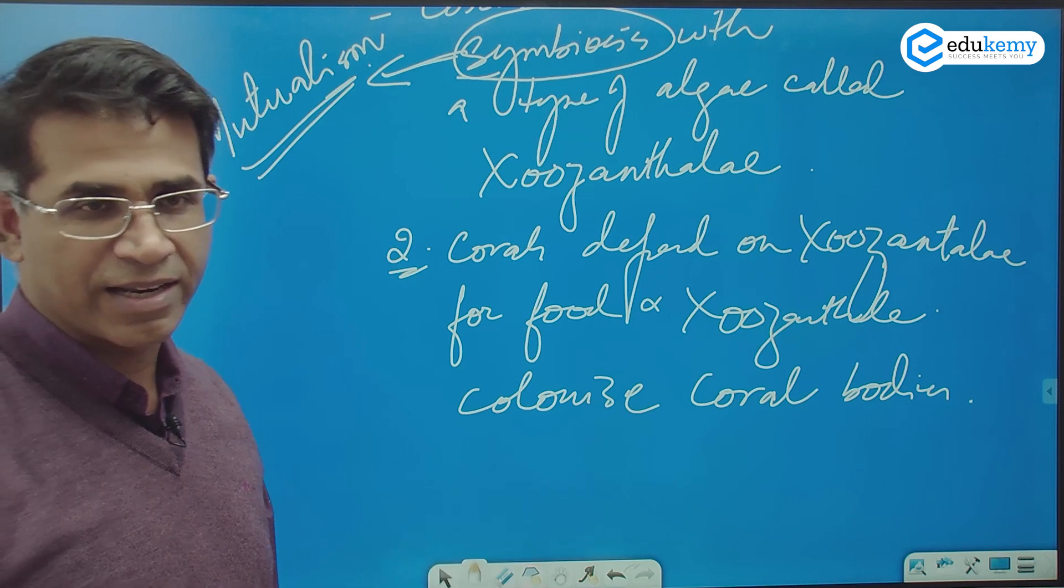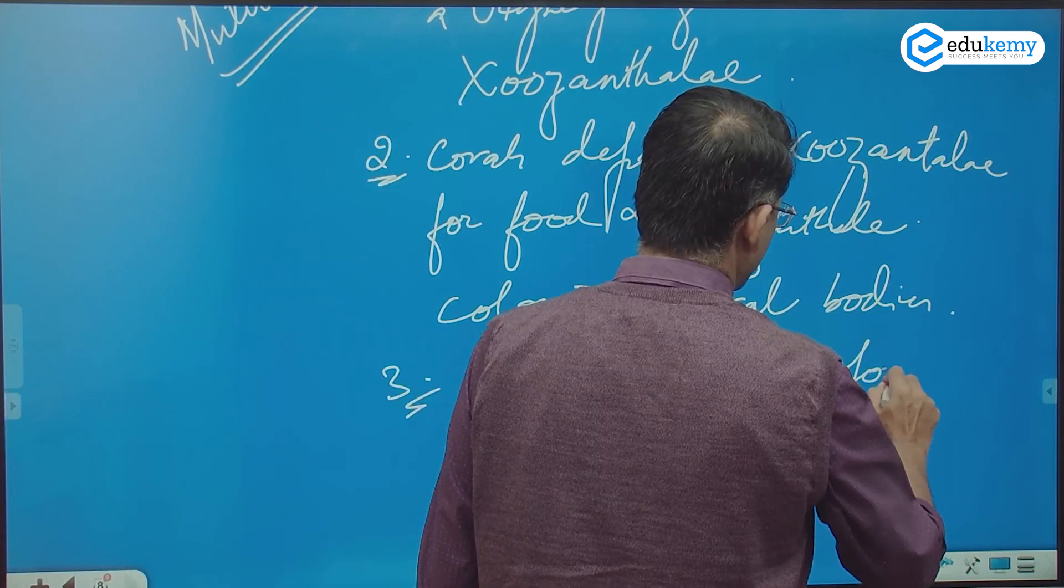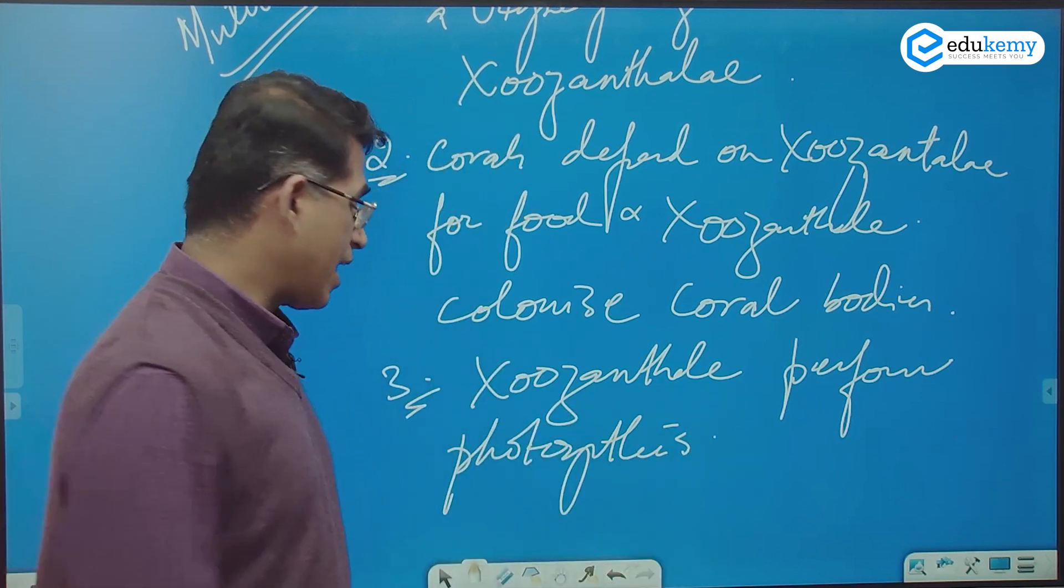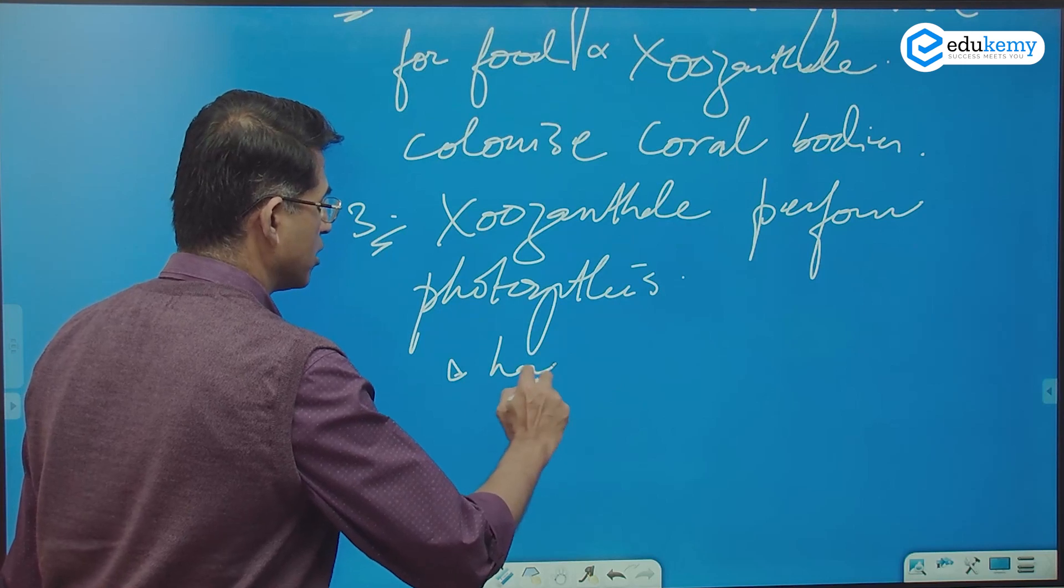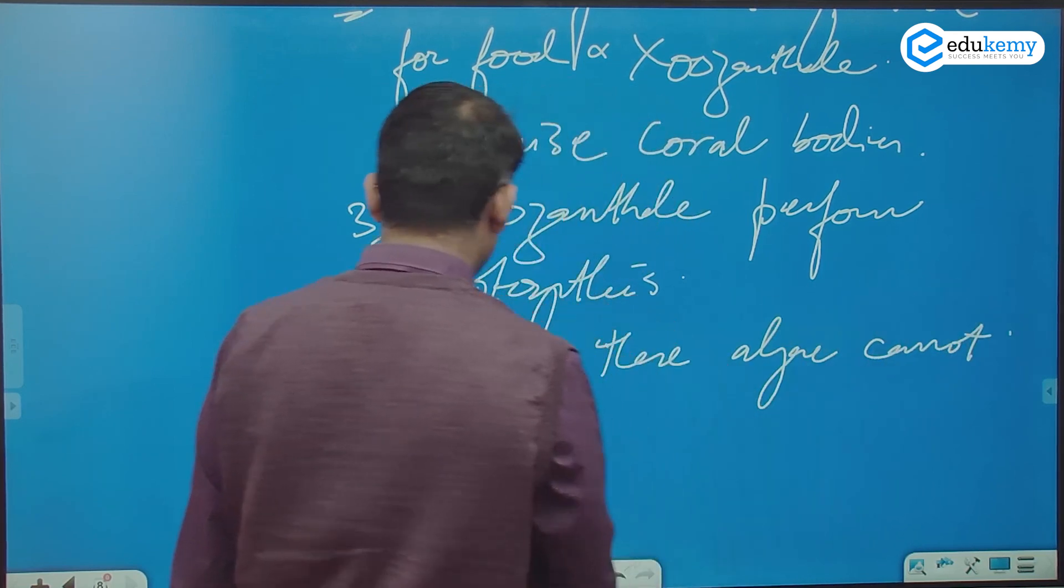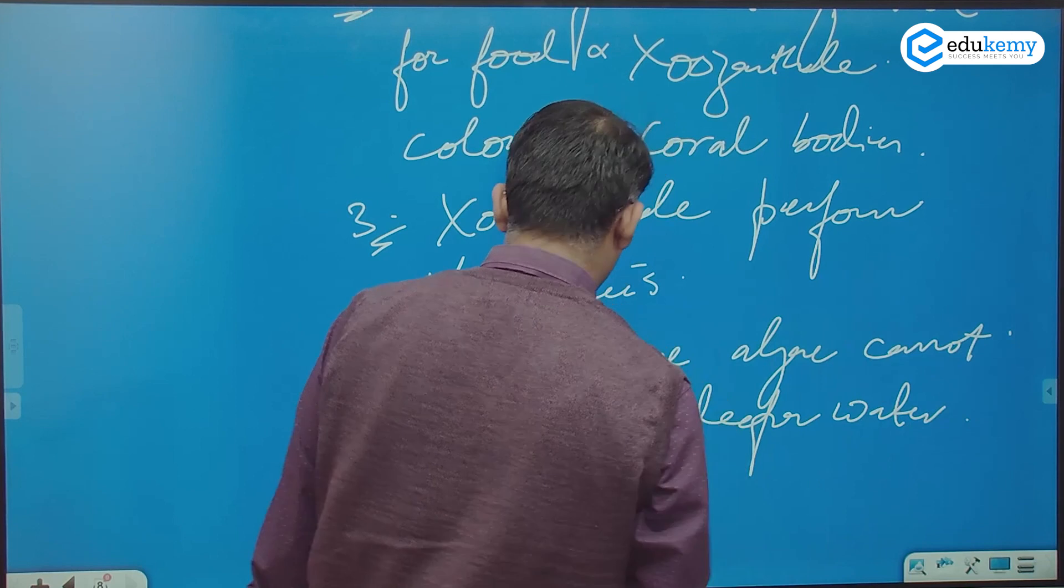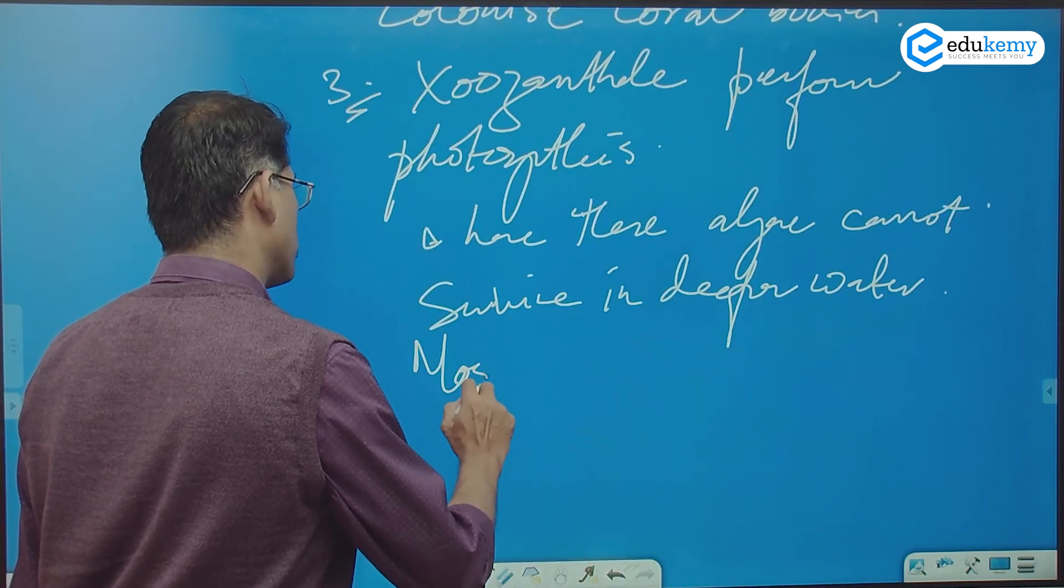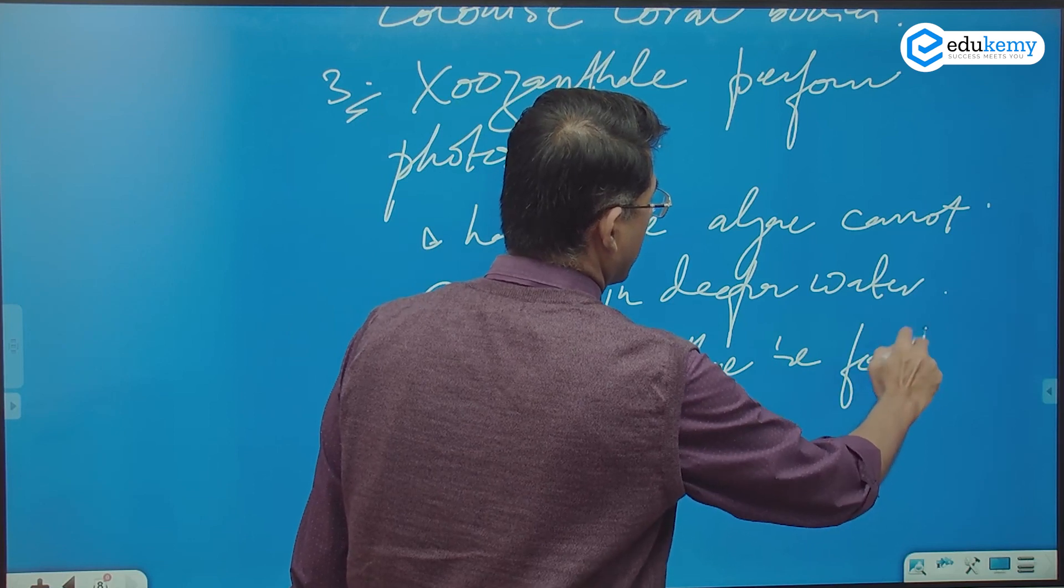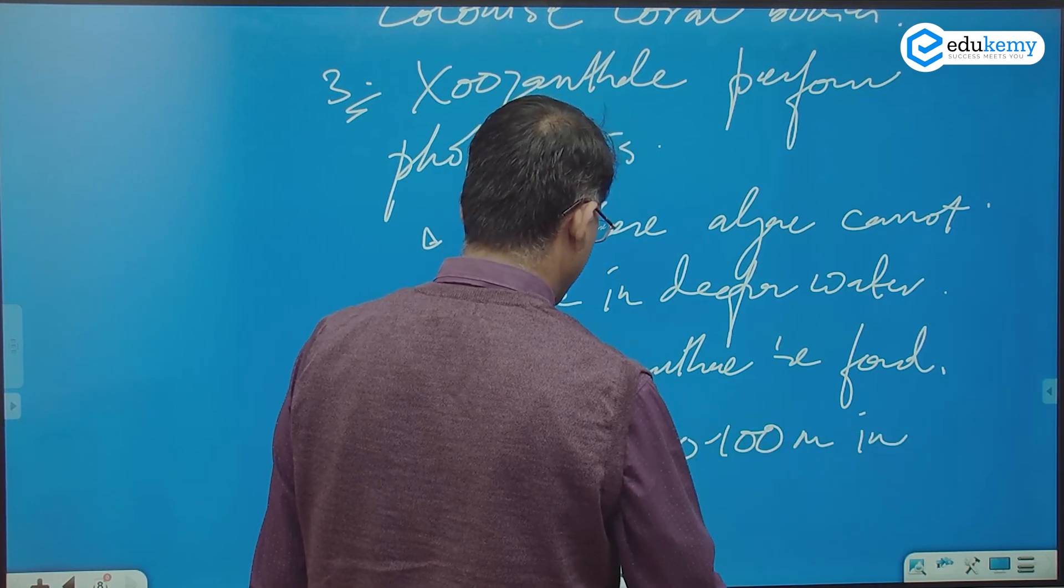Win-win situation. Correct. Symbiotic means that both are helping each other. So what happens is zooxanthellae perform photosynthesis. And hence, these algae cannot survive in deeper waters. Most zooxanthellae are found within 80 or 100 meters in the photic zone.